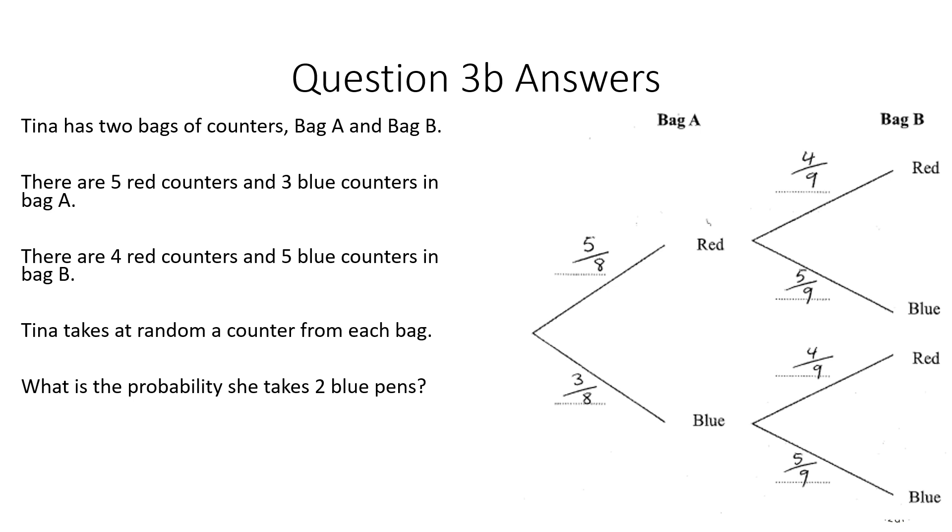The final question I asked you there was what is the probability that she takes two blue counters? Well for this we're going to need to look at this one here. Which is three out of eight on bag A. And then we've got five ninths on bag B. So now we've just got to multiply those fractions together. So three times five, the top numbers in the fractions is 15, eight times nine is 72 on the bottom number. And that gives us the probability of selecting blue blue.